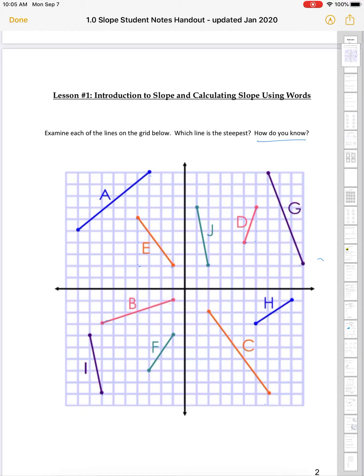Examine each of the lines on the grid below. Which line is the steepest and how do we know? So, looking at each of these lines, we're going to figure out what their slope is and see which one is the steepest. Steepest means it's going to have the sharpest incline. So, A, if we look at A, it goes up 1, 2, 3, 4, 5, and it goes over 1, 2, 3, 4, 5, 6. So, it's 5 over 6 is its slope.